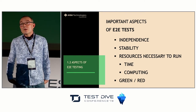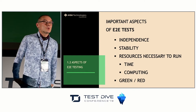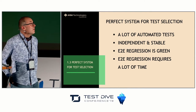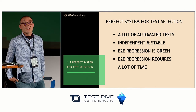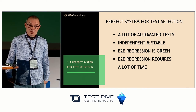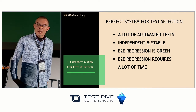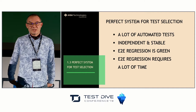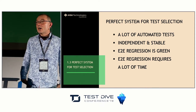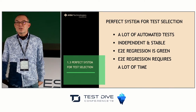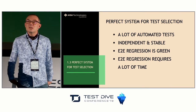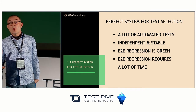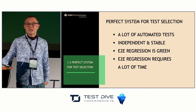The starting point should be where the application is correct. The perfect system for intelligent test selection consists of many automated tests that are independent and stable, where end-to-end regression is green and requires a lot of time to run. These assumptions may be too severe in many cases and can cause problems in applying the strategy of test selection.